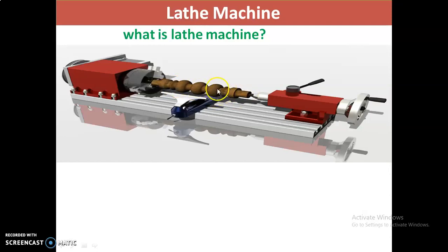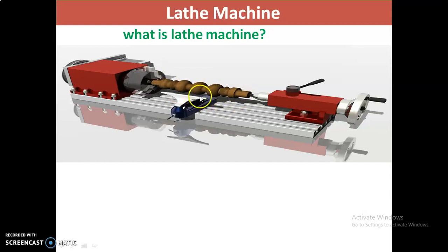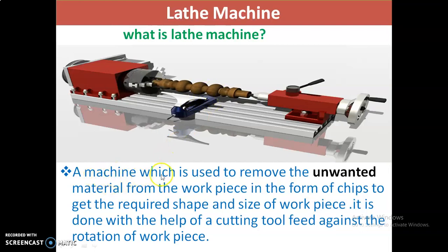This is done with the help of a cutting tool. The cutting tool is fed against the rotation of the workpiece. The workpiece is placed in between the live center and the dead center. By feeding the cutting tool against the rotation of the workpiece, we get the required shape and size.